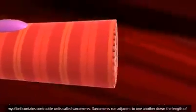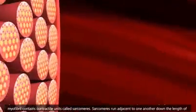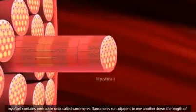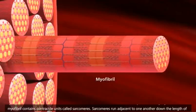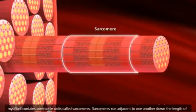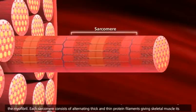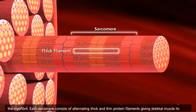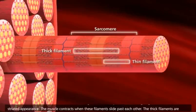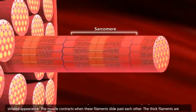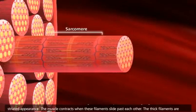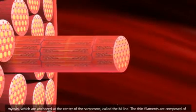Muscle fibers are composed of many myofibrils. A myofibril contains contractile units called sarcomeres. Sarcomeres run adjacent to one another down the length of the myofibril. Each sarcomere consists of alternating thick and thin protein filaments, giving skeletal muscle its striated appearance. The muscle contracts when these filaments slide past each other.